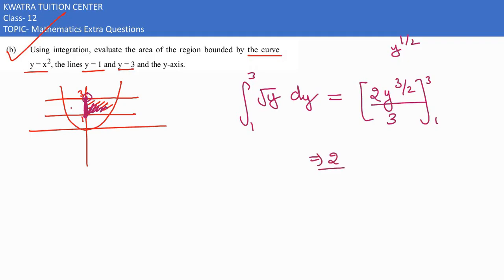So I can put the value of it now, which is 3 to the power 2 by 3 minus 1 to the power 2 by 3. So this would be nothing but your answer for part B of it.